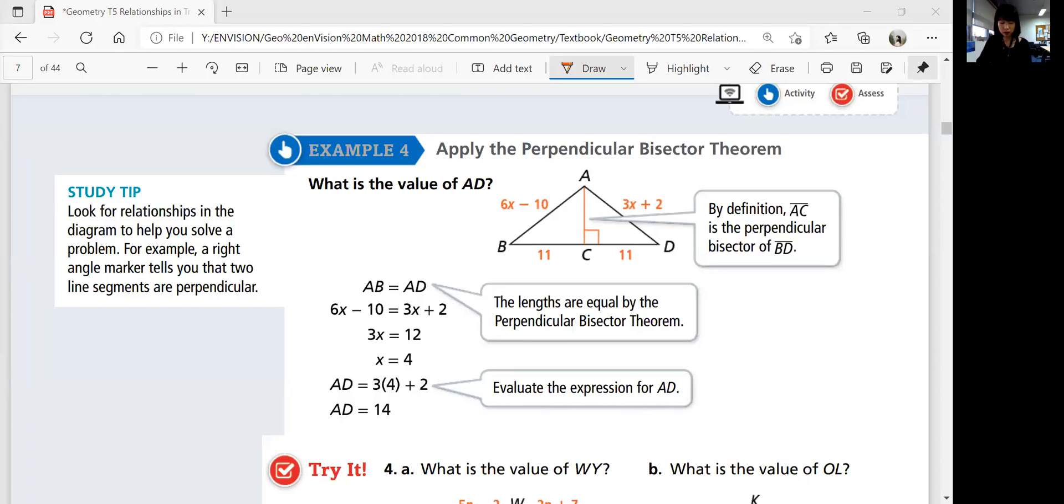We have explored a lot about the concepts and theorems of perpendicular bisectors and the midpoints of two points and thinking about the equidistant points. Let's look at example 4 now, applying the perpendicular bisector theorem.